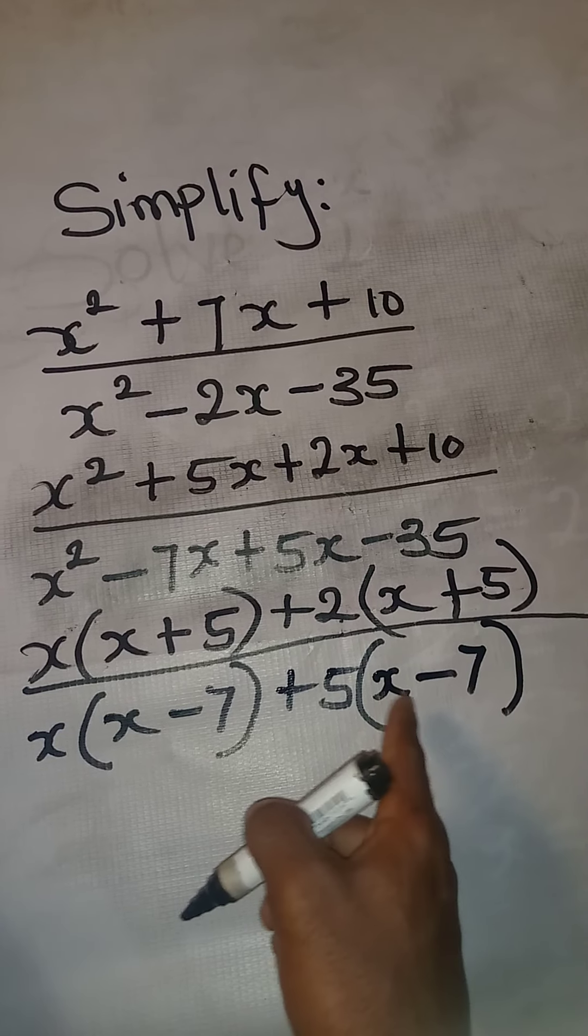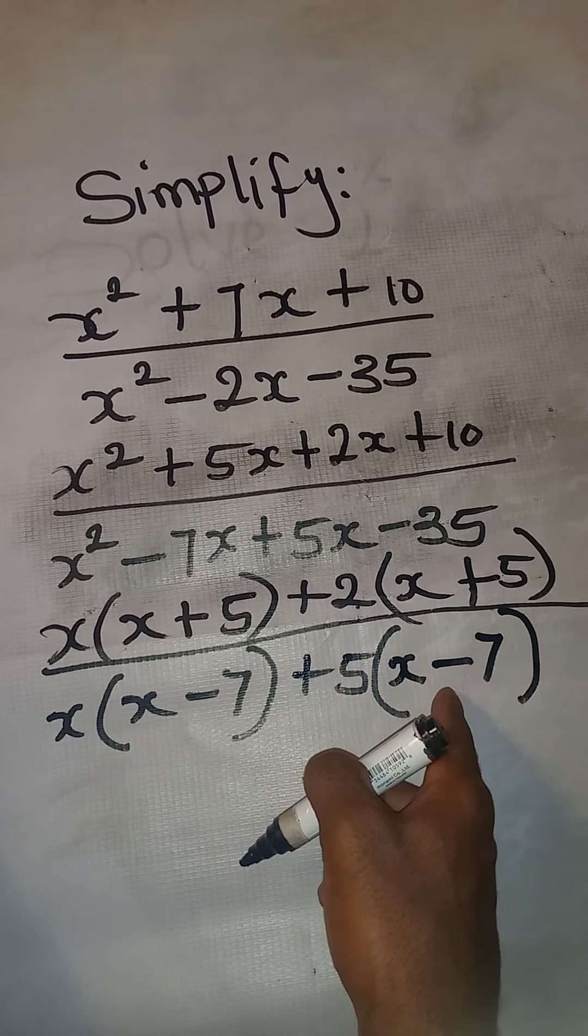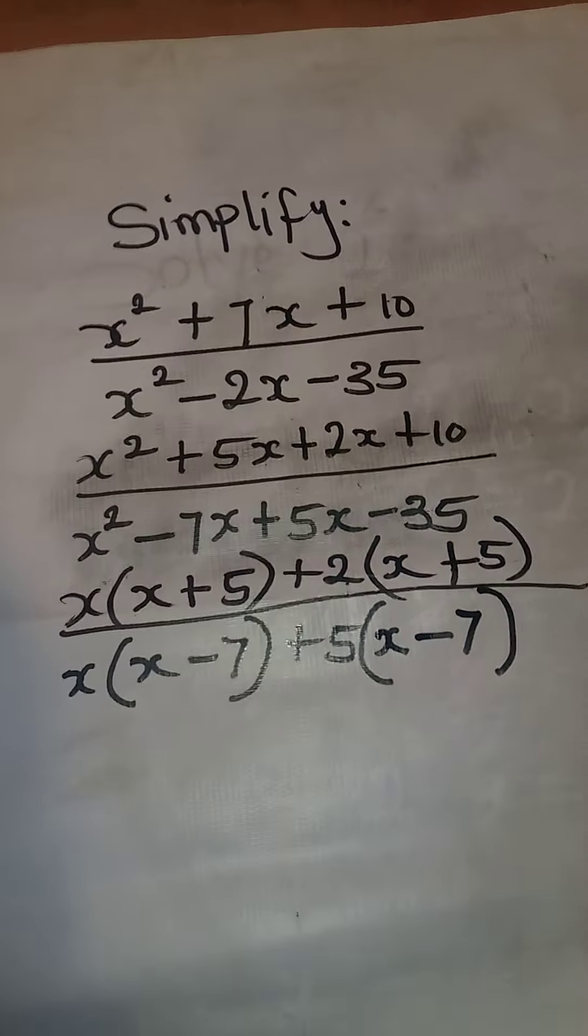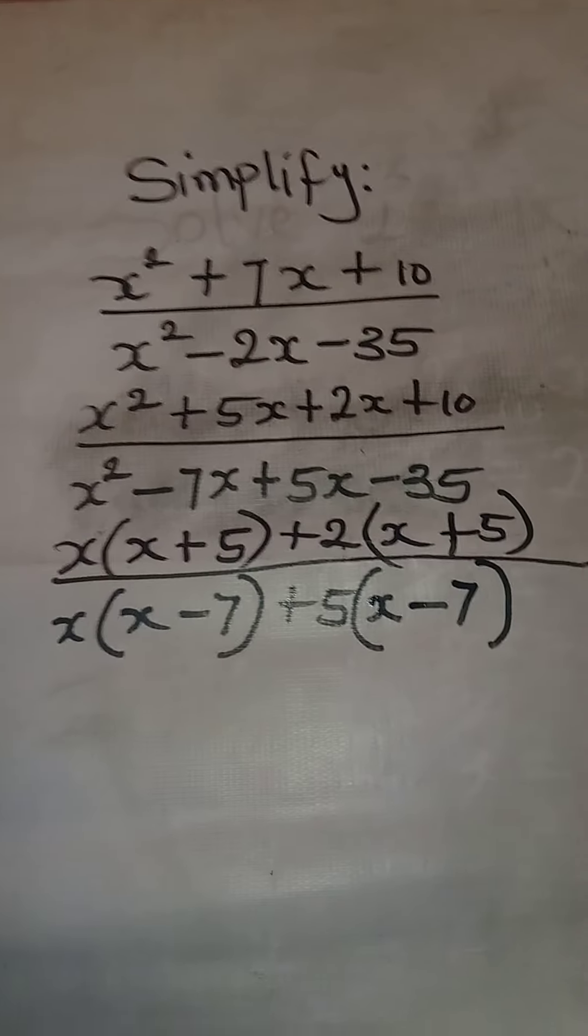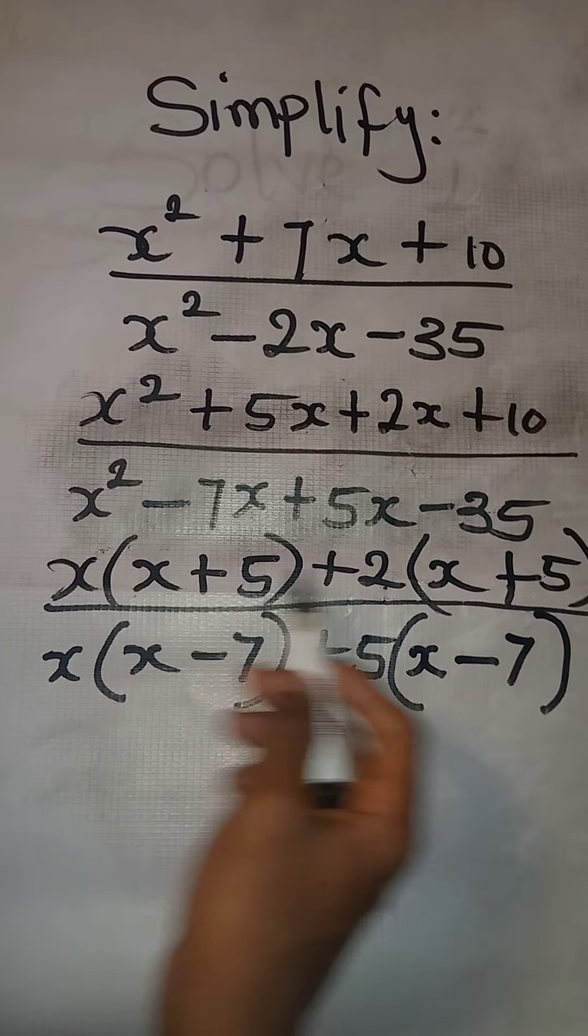5 into 35 will give us 7. And then once again, we have the same thing in the brackets. And that is settled. The next thing that we'll do is this. Look at the next thing that we'll do. We're going to bring out the terms outside of the bracket together.